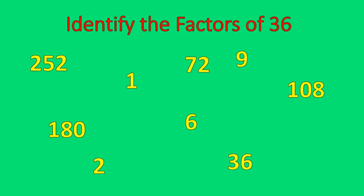Let's do a quick practice with factors. Identify the factors of 36. The numbers on the board are going to be one of two things — either factors or multiples. The numbers in red are some of the factors of 36, but the other numbers are multiples of 36, which we talked about in a previous lesson. This is one of the most common mistakes: people often mix up factors with multiples.